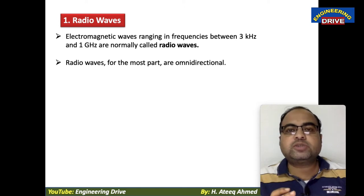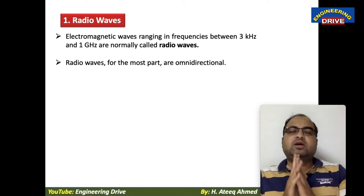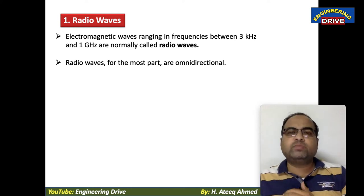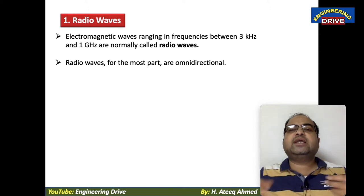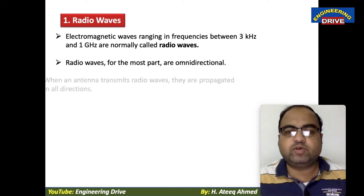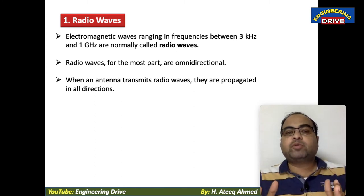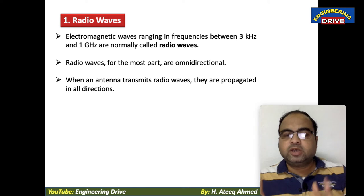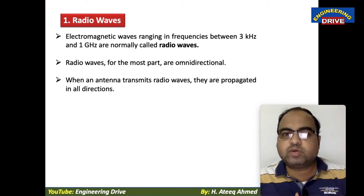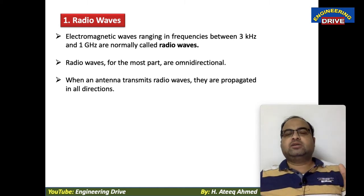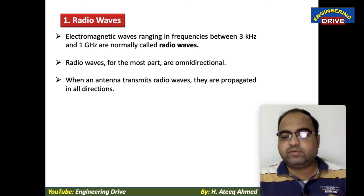Radio waves are for the most part omnidirectional. Omnidirectional means the data can be transmitted in any direction — there is no specific direction. When an antenna transmits radio waves, they are propagated in all directions; we don't know where they will go specifically. This is one of the unique features of radio waves.